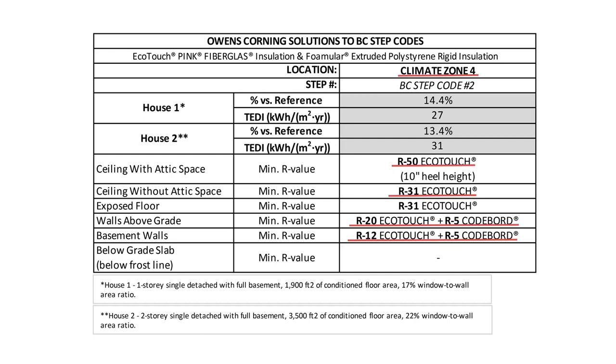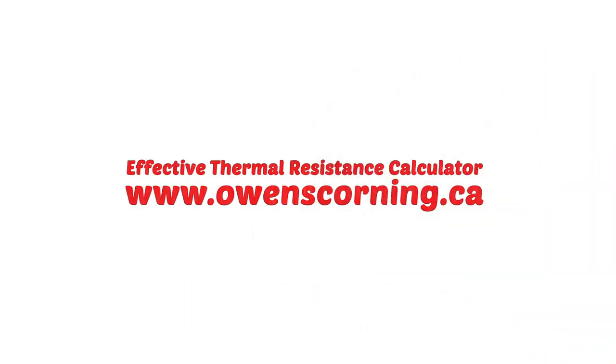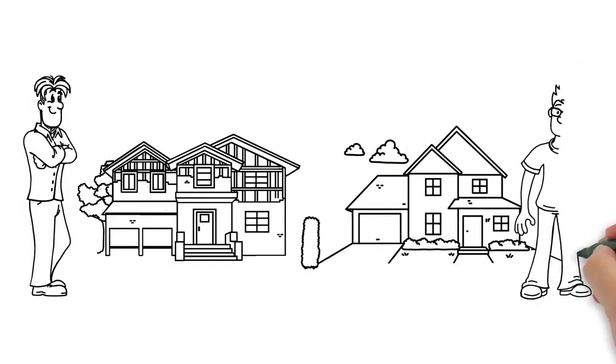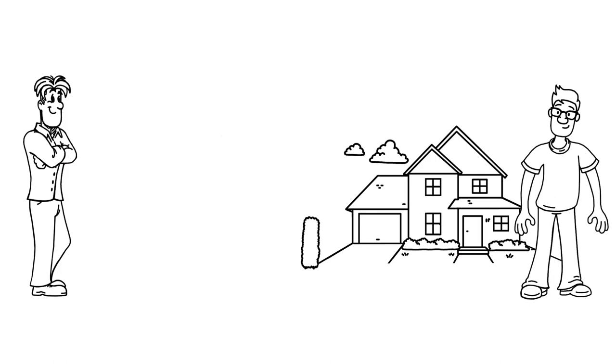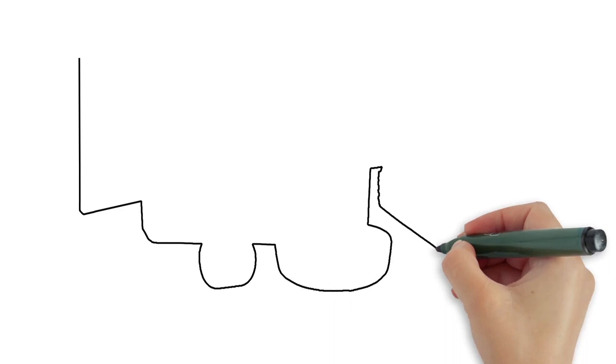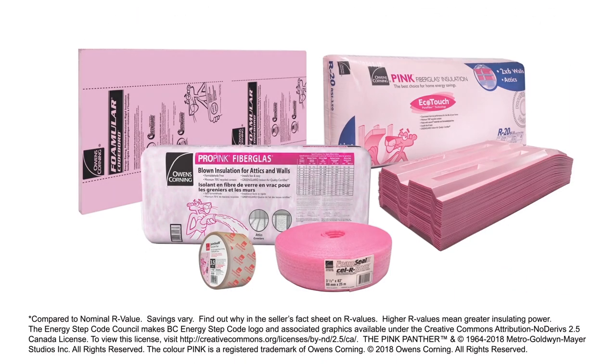You can also find an interactive online tool, the effective thermal resistance calculator at www.owenscorning.ca. No matter what your needs and whatever step you're on, Owens Corning products and solutions can help you adhere to the BC Energy Step Code when and where you need them.